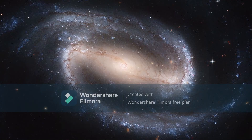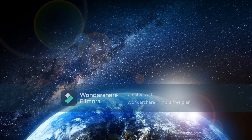The galaxy center is the center of rotation of the Milky Way. It contains a massive black hole of about four million solar masses that powers Sagittarius A, a compact radio source. Earth is located in a spiral arm of the Milky Way known as the Orion Arm, about two-thirds of the way out from the center of the galaxy.